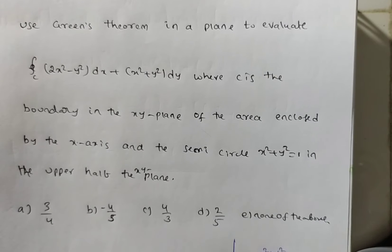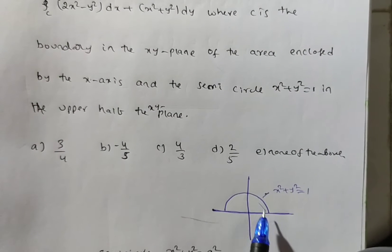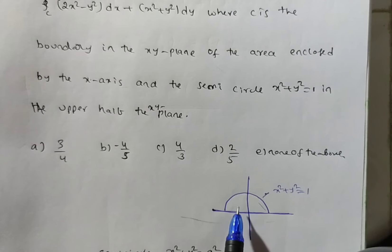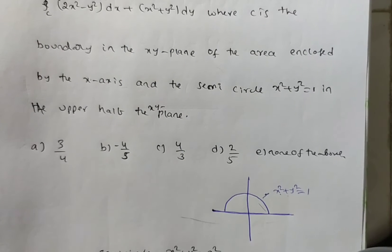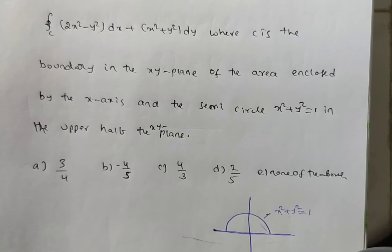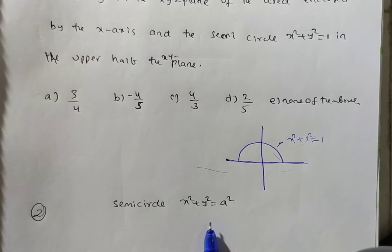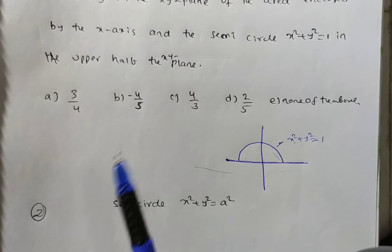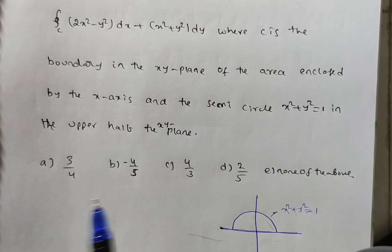We have x² + y² = 1, and we need to evaluate the integrand in the given region — the upper half of the circle in the xy-plane. You will get one of multiple choice options. I am giving this as a task for you. I will solve a similar problem but with circle x² + y² = a². After watching this video you can easily solve the original problem. Please write your answer in the comment box.